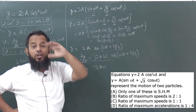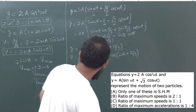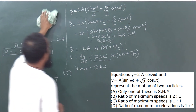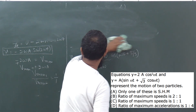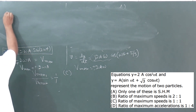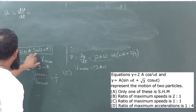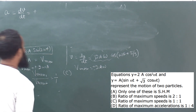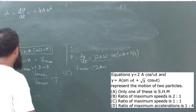Now for the ratio of maximum acceleration, we differentiate the velocity of particle one again: a₁ = dv/dt. For particle one, v = -2ωa sin(2ωt), so differentiating: a₁ = -2ωa · 2ω · cos(2ωt) = -4aω² cos(2ωt). The maximum acceleration of particle one is 4aω².